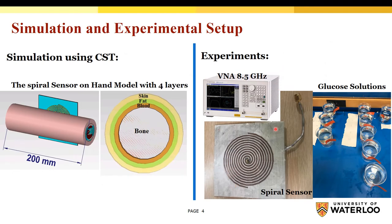After fabricating the spiral microwave sensor, we used it in experiment and simulation. For experiment, we tested the sensor initially in a water glucose solution with nine different concentrations as a proof of concept and to check the sensitivity of the sensor to the concentration. For simulation, we designed a hand model with four different layers — skin, fat, blood, and bone — and applied the sensor on the hand model to collect the response obtained by changing the dielectric properties of the layers.